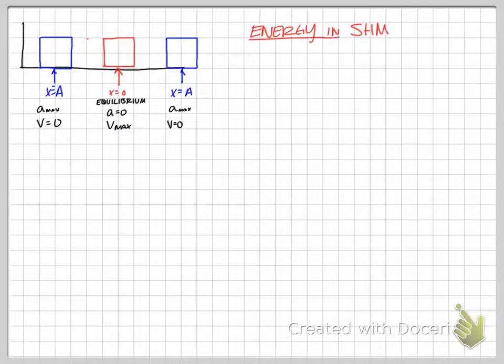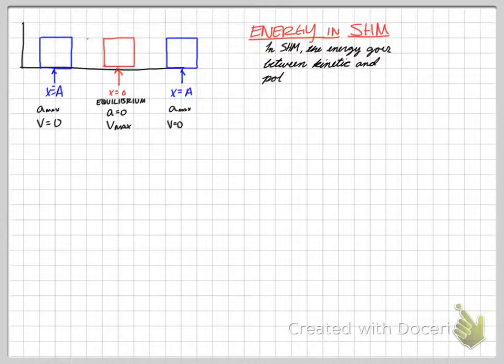Another thing to keep in mind as we do this is that there is energy involved in simple harmonic motion. And in simple harmonic motion, we get a trade between kinetic energy and potential energy. And this is going to be true for all types of simple harmonic motion. We have our maximum potential energy when we're at our maximum amplitude. And we have our maximum kinetic energy at the equilibrium position. Equilibrium is where we move fastest.